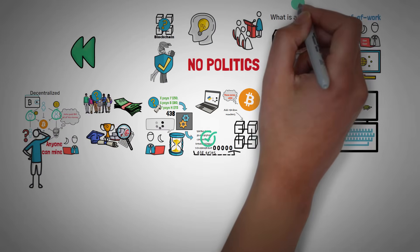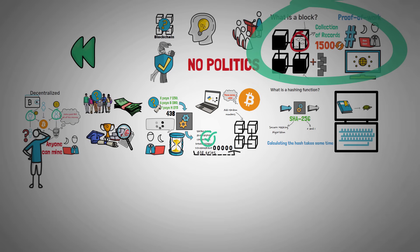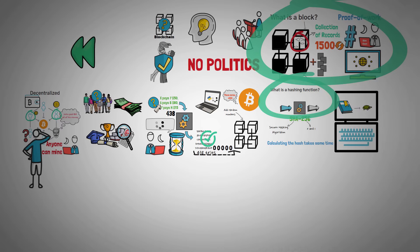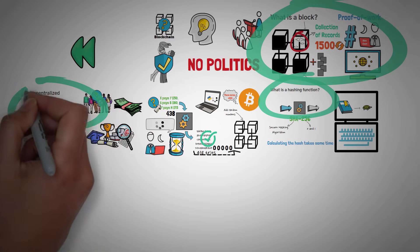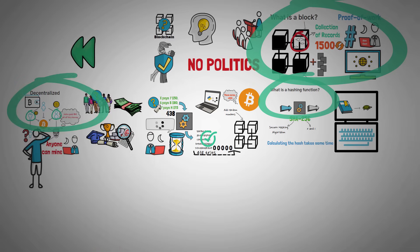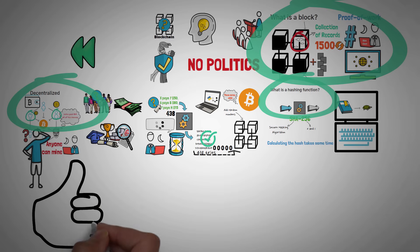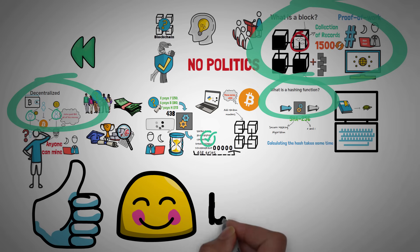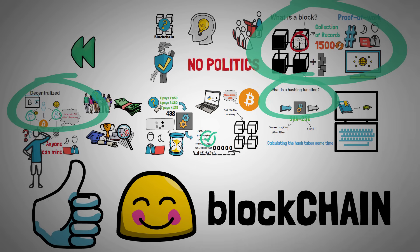So far, we've been over what a block is — it's just a bunch of data. What a hashing function is — it's to make sure that people actually put in work to participate in the blockchain. And we've gone over what decentralized means — basically that one person does not control it. If you're still with us, please consider clicking that like button. Next up, let's learn why it's actually called a blockchain.